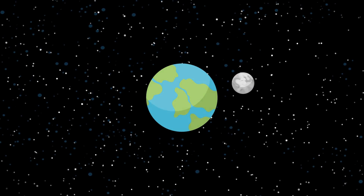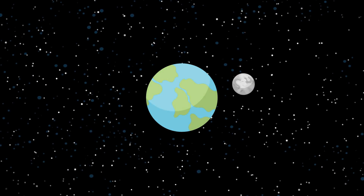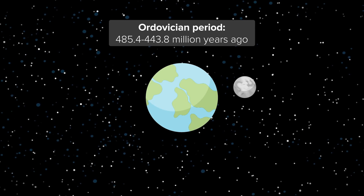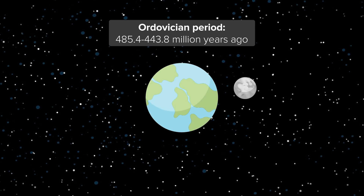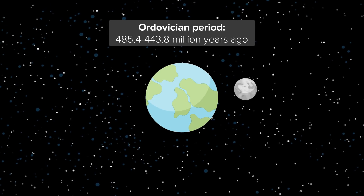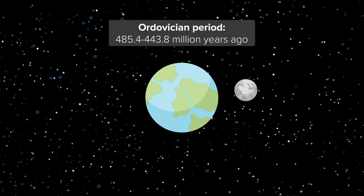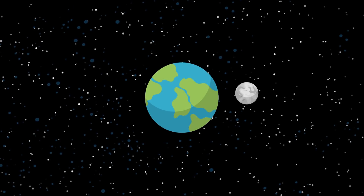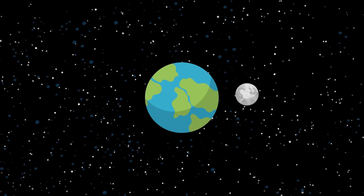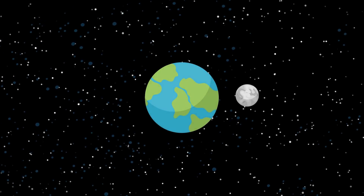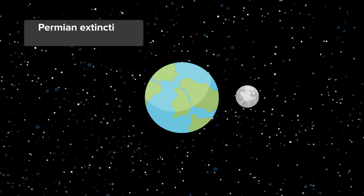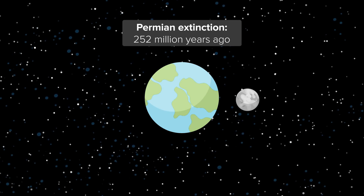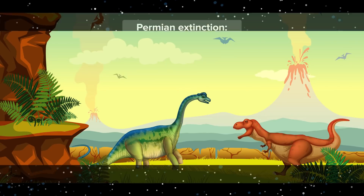Some life forms would survive, and others would perish. During the end of the Ordovician period, around 85 percent of all life that had been flourishing — most of it in the sea — became extinct during an ice age. Many more devastating extinctions would take place, such as the Permian extinction that killed about 96 percent of marine species and land animals.